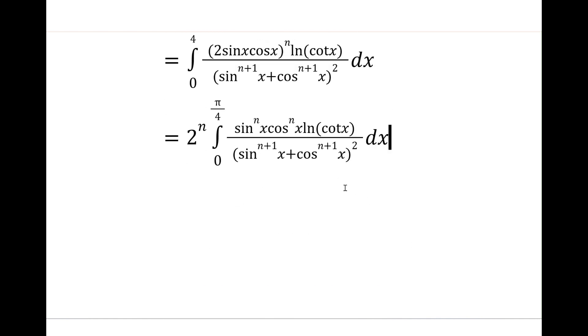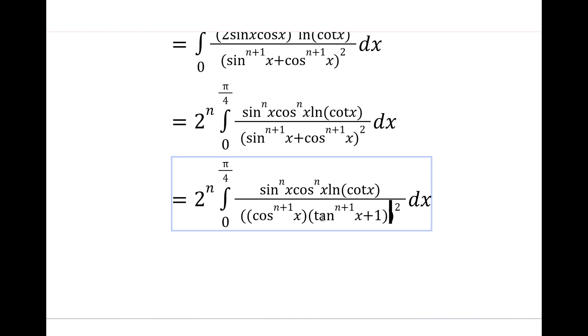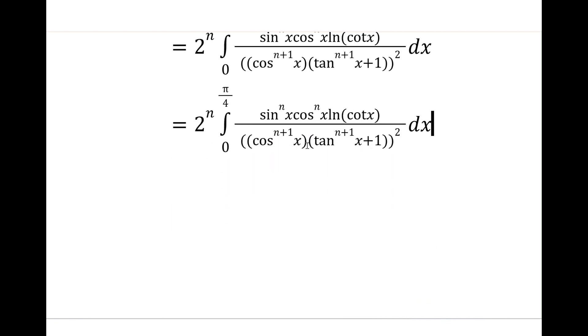After this maybe you're a bit stuck. What do we do? Well I'm just going to tell you we can do this sort of factoring trick. We're going to factor out cos to the n plus 1 outside of this denominator and that's a pretty good way to get a tangent appearing. We can rewrite this as cos to the n plus 1 times tan to the n plus 1 plus 1. Now we're going to take this cos to the n plus 1 outside, so when we take it outside it's going to be cos to the 2n plus 2.